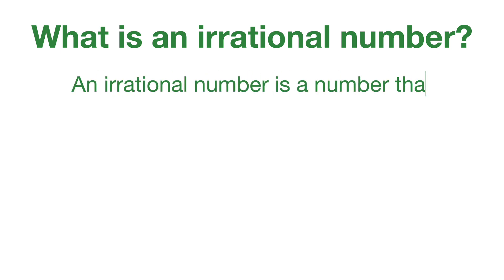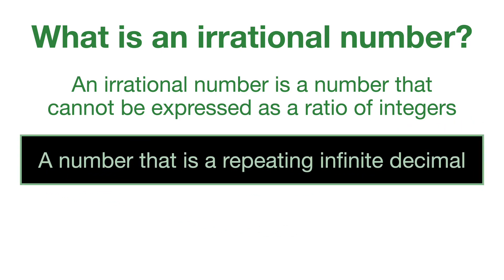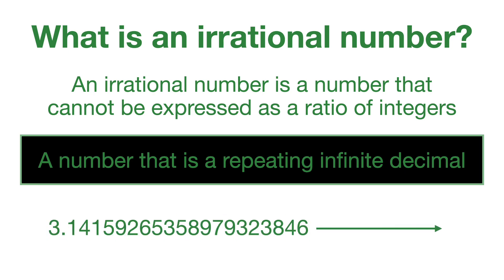An irrational number is a number that cannot be expressed as a ratio of integers. A simpler way to remember it is that it's a number with a non-repeating infinite decimal. Let's give an example. You've got 3.14159265358979323846 and these numbers keep going on forever. This number we know as pi.